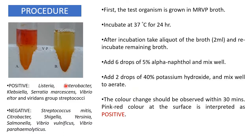For the procedure, the test organism is grown in MRVP broth. Always remember to use freshly grown 18 to 24-hour-old culture to get accurate results. After inoculation, incubate at 37°C for 24 hours. After incubation, take an aliquot of broth — approximately 2 ml — and re-incubate the remaining broth.